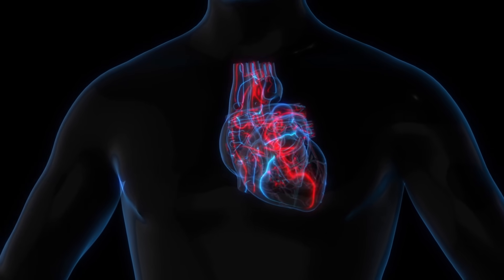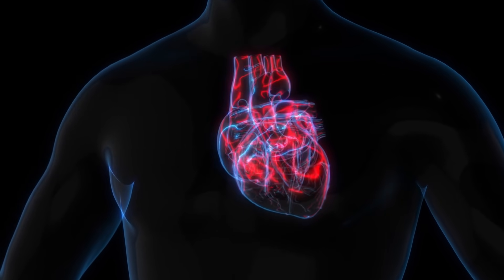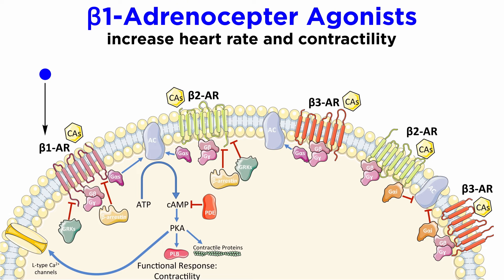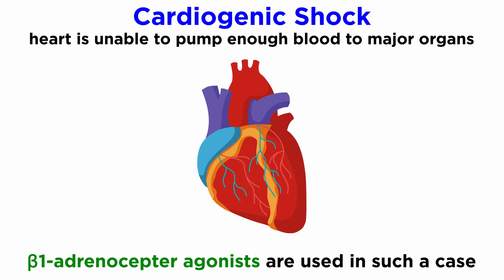Conversely, acute heart failure usually requires an alternative approach, where cardiac output needs to be rapidly increased in order to supply sufficient oxygenated blood to critical organs. Here, beta-1 agonists are used to increase heart rate and contractility to compensate for falling cardiac output. This approach is generally only used in acute heart failure, particularly cardiogenic shock — the most severe manifestation of acute heart failure — which is often caused by acute coronary syndromes, to be covered in future tutorials.